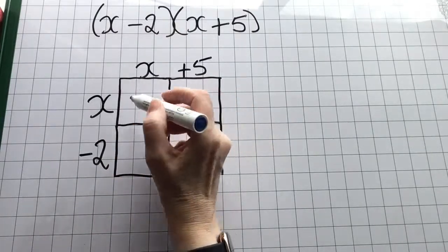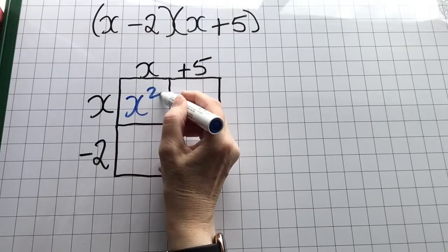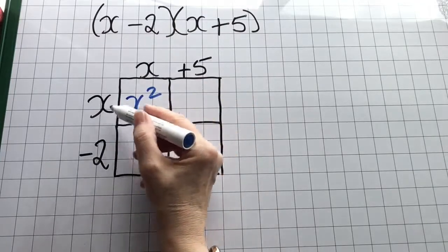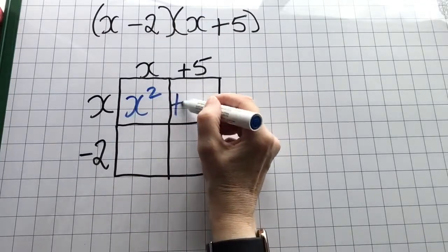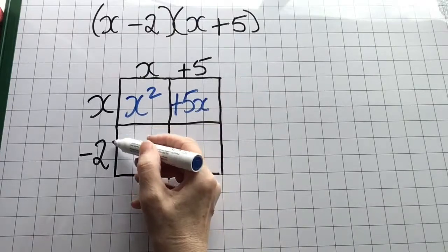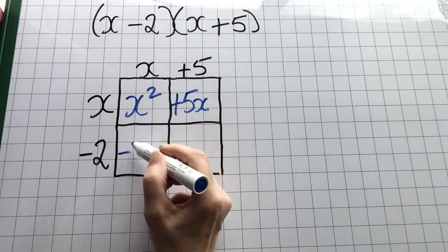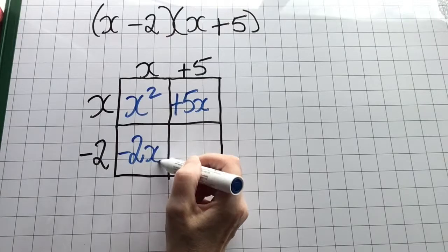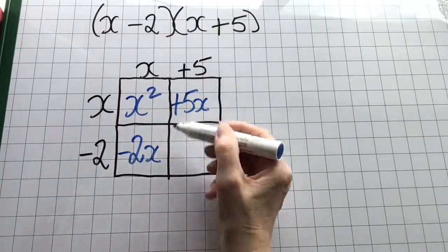Now I find the area of each rectangular box. So x by x is x squared, x by 5 is 5x, minus 2 by x is minus 2x, and minus 2 by 5 is minus 10.